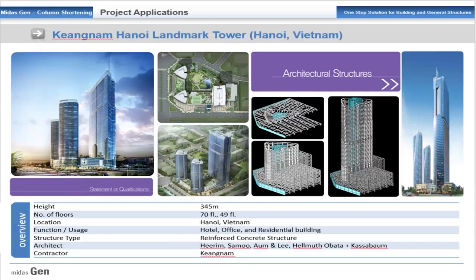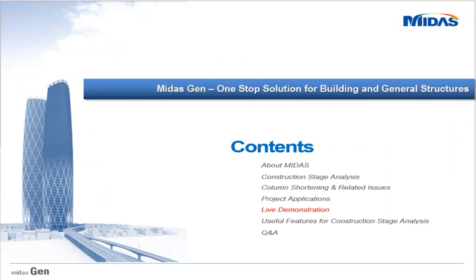Another application is the Qing Nam Hanoi Landmark Tower in Vietnam — twin towers of 49 floors each and one tower of 70 floors, a complete reinforced concrete structure analyzed in Midas Gen. We have seen the general concept of column shortening analysis and the project applications in Midas Gen. Now, for the live demonstration, I would like to discuss the Midas Gen procedure for column shortening analysis.